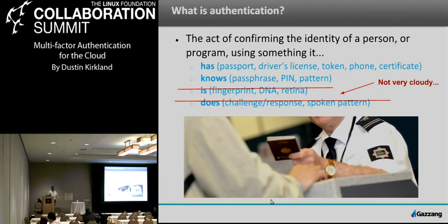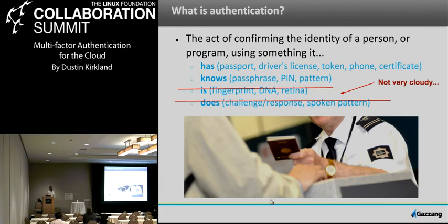Before we talk about multi-factor authentication, let's talk about authentication. At its most basic, it's the act of confirming the identity purported by a person — or in software terms, often a program — by using something that it has, knows, is, or does. From a 'has' perspective, we're all familiar with showing our ID or passport at the airport or DMV — that's something you have. From a software perspective, that might be a token or a private certificate. Something that someone knows is the traditional passphrase, PIN, or the swipe pattern on your phone.